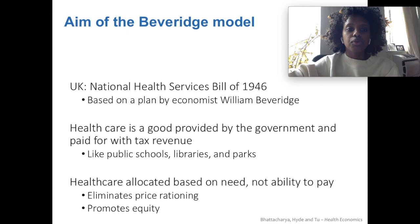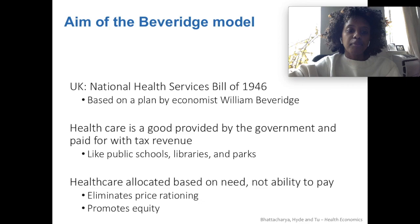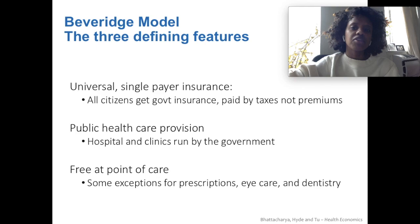First, the Beveridge model for nationalized healthcare. The Beveridge model is from economist William Beveridge, and it was first passed in the UK in 1946. In this model, healthcare is provided by the government and paid for by tax revenues, the same way that we have public schools, libraries, and sidewalks. Healthcare is allocated based on your need, rather than your ability to pay. So there is no price-based rationing of resources, and it really promotes equity.